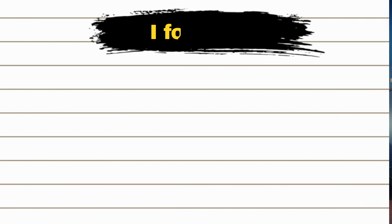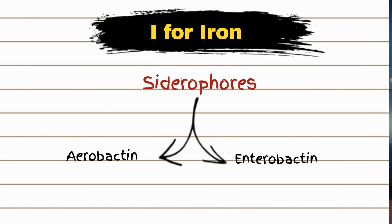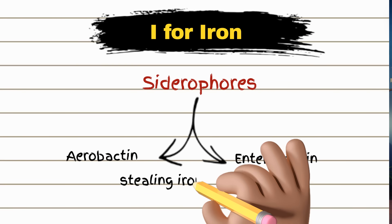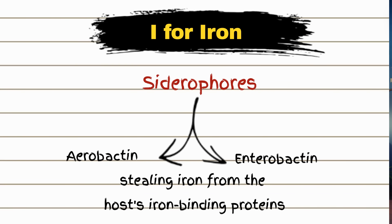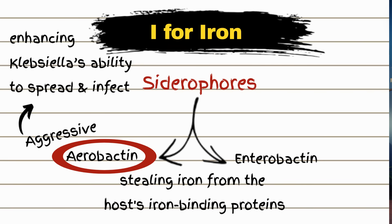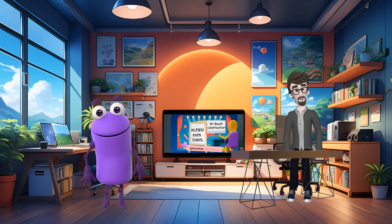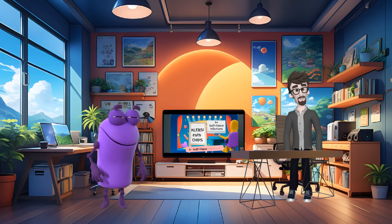Now, I for iron. Klebsiella loves iron, and it has special tools called siderophores to grab it — think of them as iron-snatching ninjas. There are two main types: aerobactin and enterobactin. These are molecules that bind iron very tightly, stealing it from the host's iron-binding proteins. Without iron, Klebsiella can't grow, so it uses these siderophores to thrive and cause more damage. Aerobactin is particularly aggressive, enhancing Klebsiella's ability to spread and infect, while enterobactin helps Klebsiella outcompete other bacteria and thrive in the iron-scarce environment of our bodies.